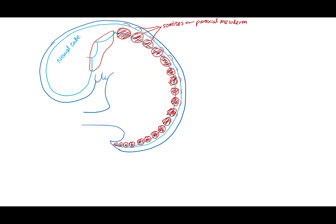The paraxial mesoderm in the head region, although they got there first, don't quite ball up into somites, so they're called the somitomeres instead. And these will give rise to the base of the skull and the muscles of the face and neck regions. In this video, we'll focus our attention on the neuromuscular development below the head.